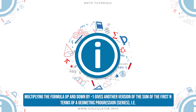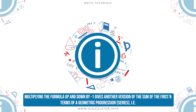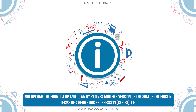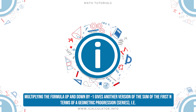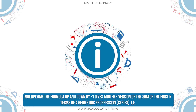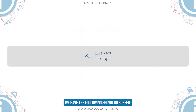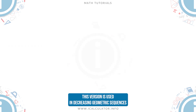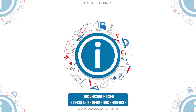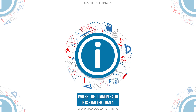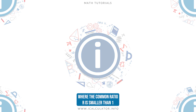Multiplying the formula up and down by minus one gives another version of the sum of the first n terms of a geometric progression series, shown on screen. This version is used in decreasing geometric sequences where the common ratio r is smaller than one.